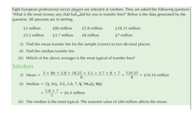Eight European professional soccer players are selected at random. They are asked: what is the most money any club has paid you in transfer fees? Below is the data generated by the question — all amounts are in sterling. The values given were: 3 million, 80 million, 5.8 million, 18.25 million, 3.5 million, 3.7 million, 8 million, and 7 million pounds.